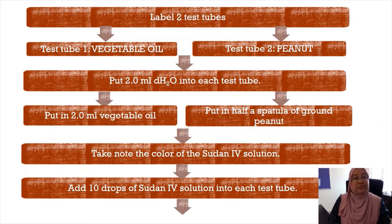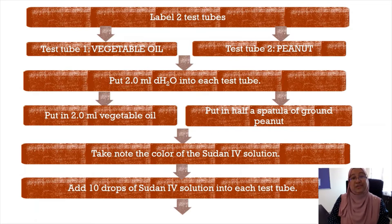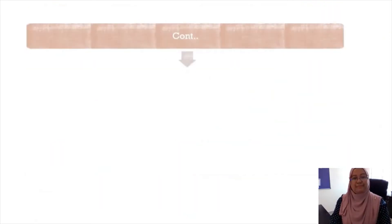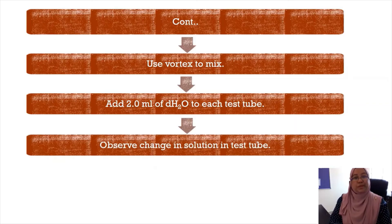This is the final procedure to determine the presence of lipid. Label two test tubes: test tube one for vegetable oil, test tube two for peanut. Both test tubes need to have 2 ml of water placed in them. In test tube one, put in 2 ml of vegetable oil; in test tube two, put in half a spatula of ground peanut. Take note of the color of the Sudan IV solution, then add 10 drops of Sudan IV solution to each test tube. Mix both test tubes using a vortex mixer, then add 2 ml of water to each test tube and observe any changes that occur.